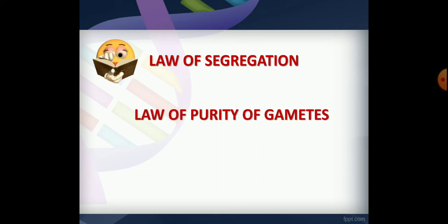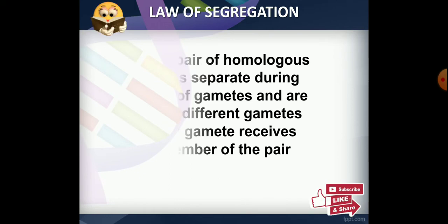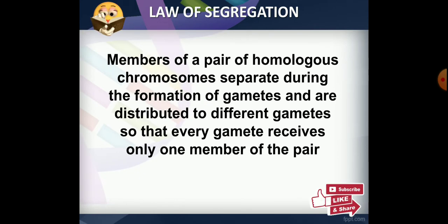The second law is the law of segregation, also called the law of purity of gametes. It states that members of a pair of homologous chromosomes separate during the formation of gametes, and are distributed to different gametes so that every gamete receives only one member of the pair. This can be explained further in a video on meiosis.